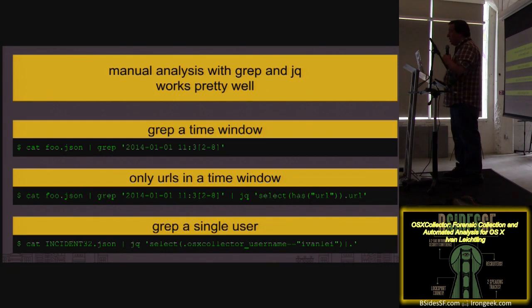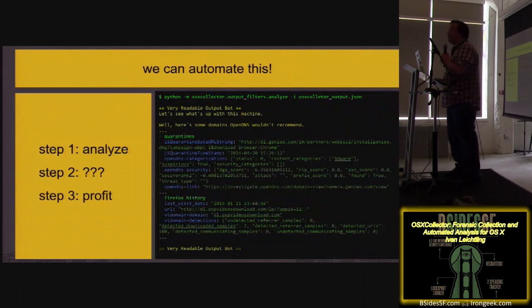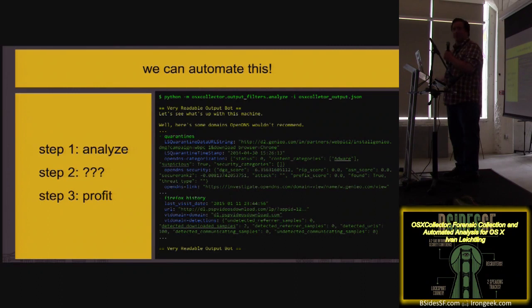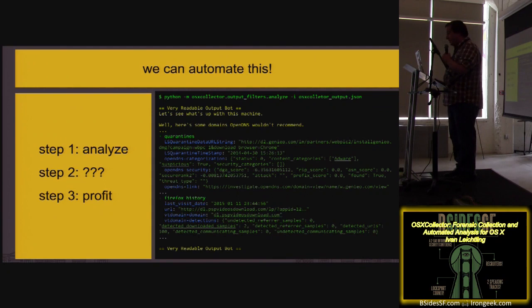Then we went for: let's just automate the whole thing. We kind of knew what we were doing — we'd been doing it for a while. We now run generally one command and it prints out very readable output. This is just a small snippet, but it's saying: here's some activity, quarantines from domains that OpenDNS said were bad. If you see that, you get an immediate sense — they downloaded something from a domain that somebody already knew was bad, and it's probably compromised.